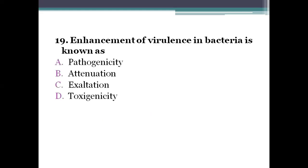Next question: enhancement of virulence in a bacterium is known as option A, pathogenicity. Option B, attenuation. Option C, exaltation. Option D, toxigenicity. The right answer is exaltation — it is the enhancement or increase of virulence of a strain, achieved by serial passages in experimental or favorable animals.